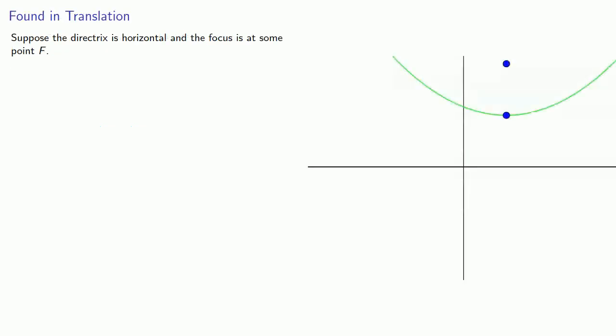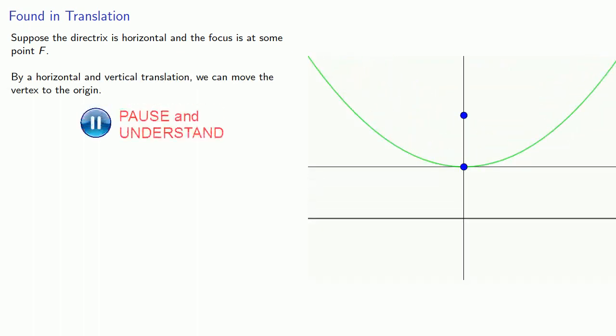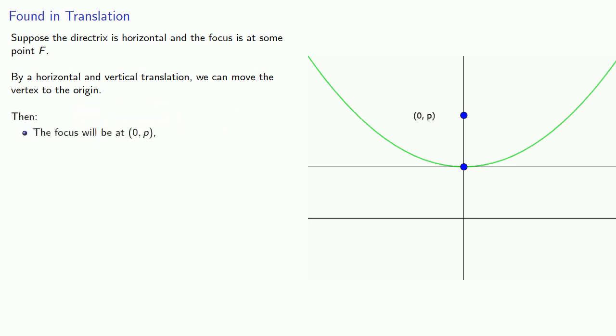Suppose the directrix is horizontal and the focus at some point f. By a horizontal and vertical translation, we can move the vertex to the origin. At that point, the focus will be at some location (0, p) — that's p units above the vertex — and the directrix will be the line y equals negative p, that's p units below.